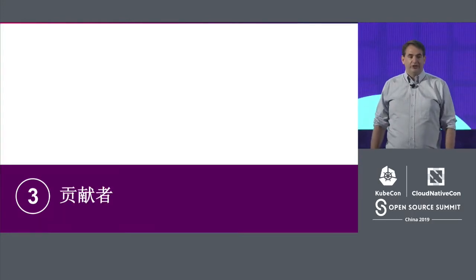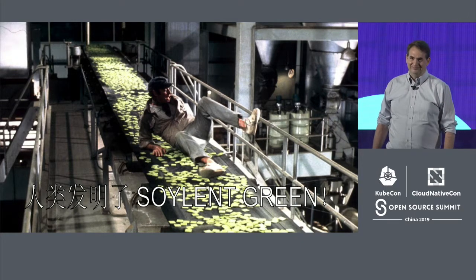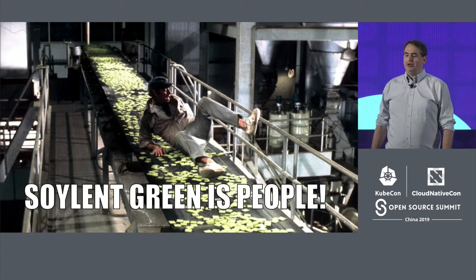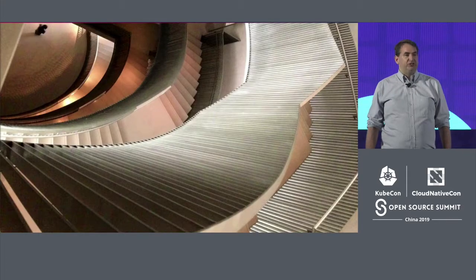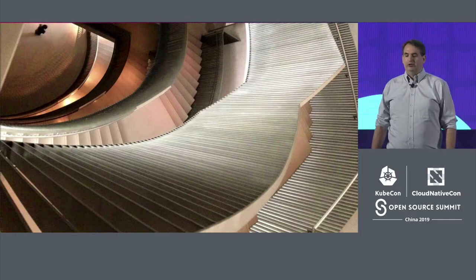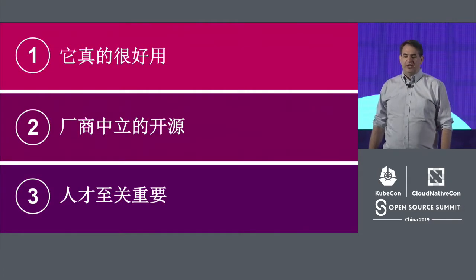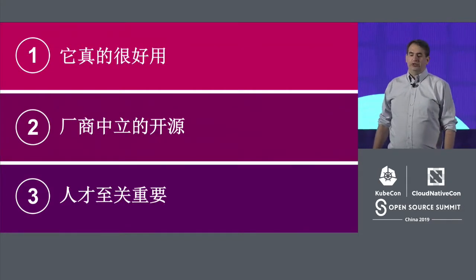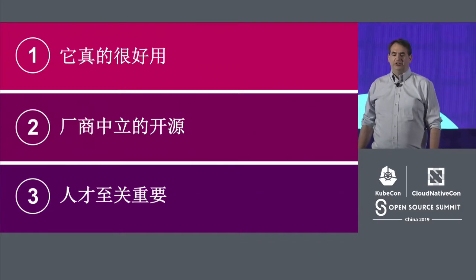Number three: it's the people. Kubernetes, like Soylent Green, is people. The project has been developed by an extraordinary group of contributors, has done an impressive job onboarding new users — what's been called the time-to-first serotonin — and has explicitly worked to narrow the distance between the steps of the contribution ladder, from user to contributor to reviewer to leader. These are my three ideas on the reasons for success, but I'd love to hear yours either in person here at the conference or on WeChat or Twitter. The thought I want to leave you with is how deliberate all three elements of Kubernetes' success have been.